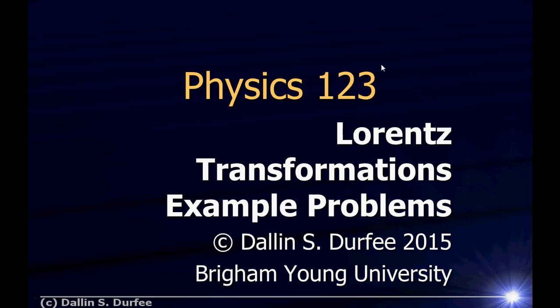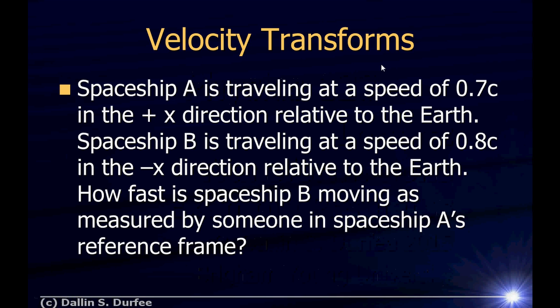Let's do some Lorentz transformation example problems. Spaceship A is traveling at a speed of 0.7C in the plus X direction relative to the Earth. Spaceship B is traveling at a speed of 0.8C in the negative X direction relative to the Earth. How fast is spaceship B moving as measured by someone in spaceship A's reference frame?